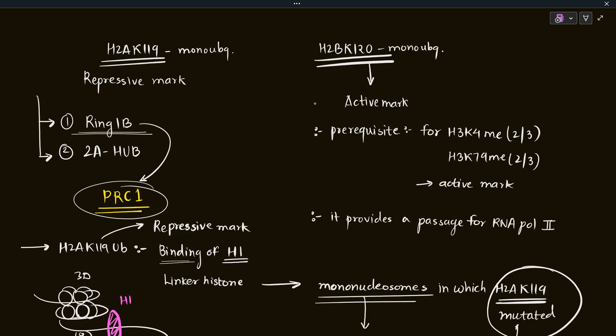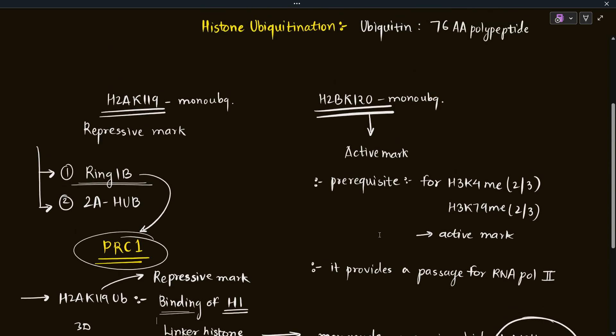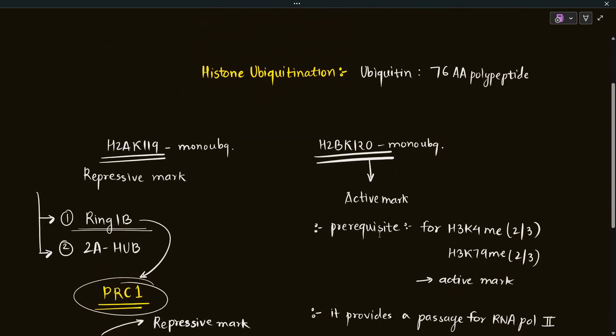Instead of being a tag for damaged protein, histone ubiquitination is quite important in epigenetics. That was all about ubiquitination. In the next lecture we will learn about a different kind of histone modification — histone tail clipping. That's it for now, see you, bye bye.